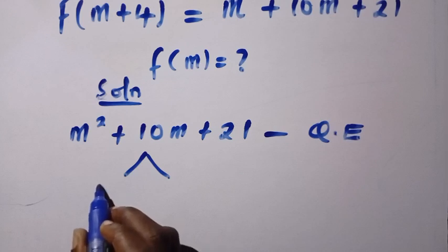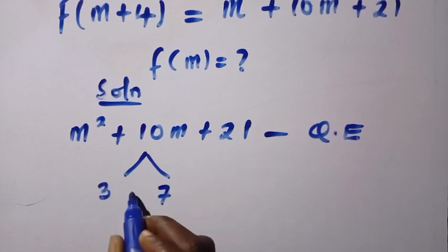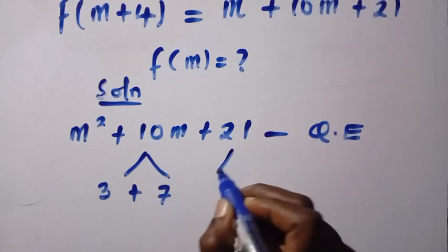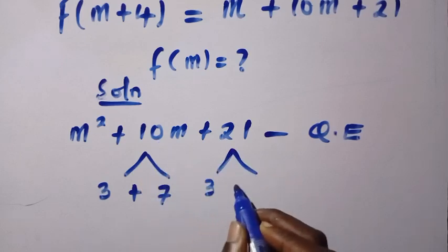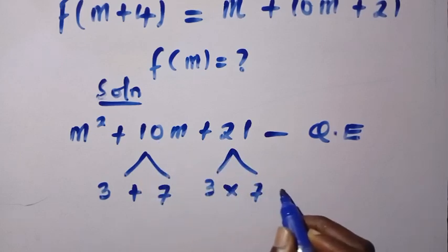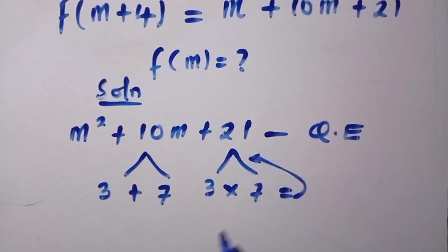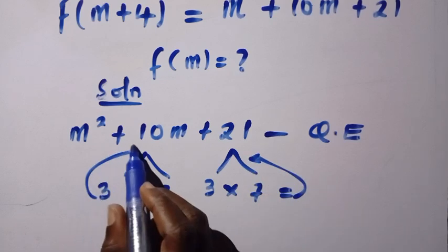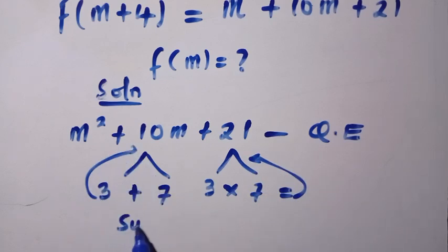If I use 3 and 7, so if we add 3 and 7 together, we are going to get 10. And also, if we have 3 multiplied by 7, this gives us 21. So we have this as the sum, and here is the product of this root.